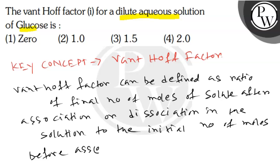Before association or dissociation. Therefore, i equals final value of n divided by initial value of n.